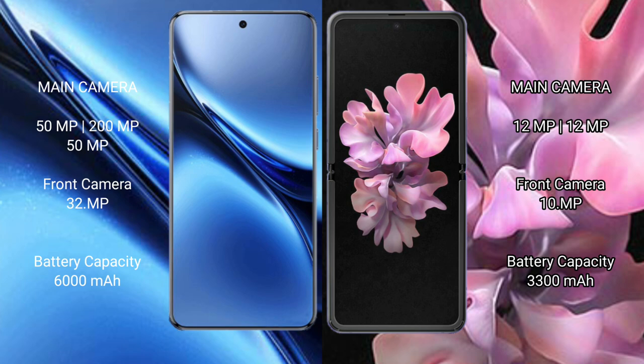The Vivo X 200 Pro features a rear triple camera setup of 50MP plus 200MP plus 15MP, while the Samsung Galaxy Z Flip has a rear dual camera setup of 12MP plus 12MP with one front camera at 12MP. The Vivo X 200 Pro packs a 6000mAh battery with 90W fast charging, compared to the Samsung Galaxy Z Flip's 3300mAh battery with 15W fast charging.